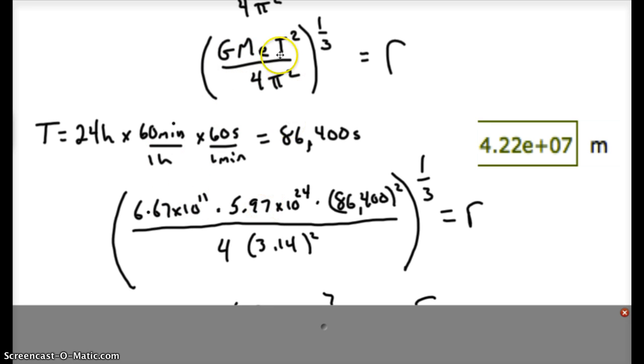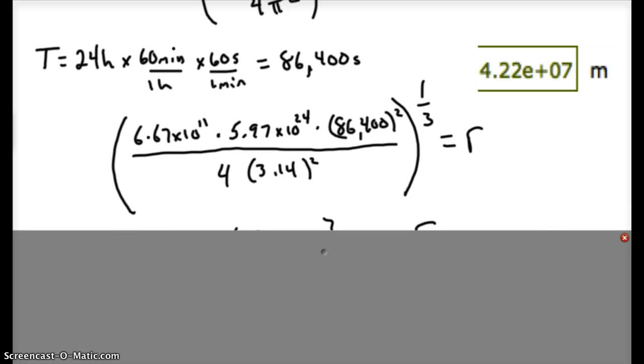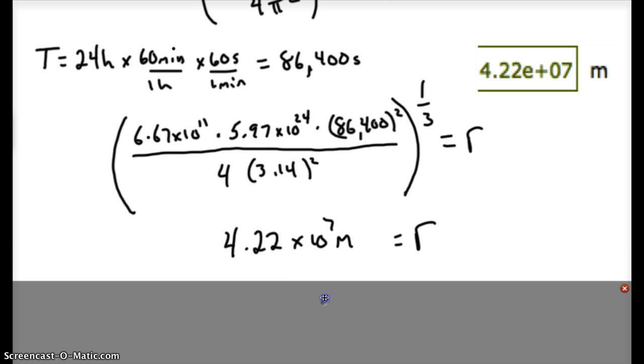So here's our expression. Here's our G, our mass of the Earth, the square of the period, and 4 times π² all raised to the 1/3 power. If you get the right answer, try that on your calculator. What you should come up with is the distance between the center of the Earth and the satellite to be 4.22 × 10⁷ meters.